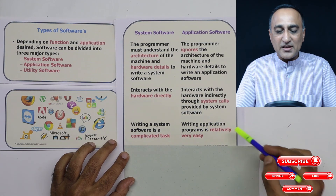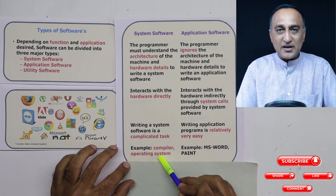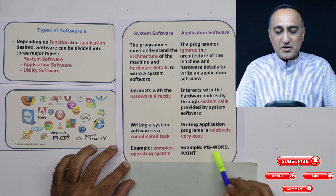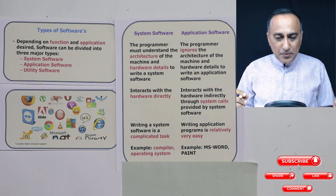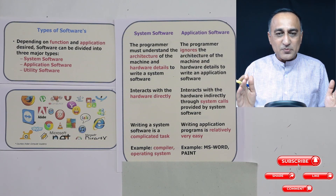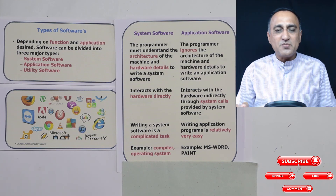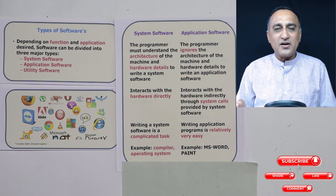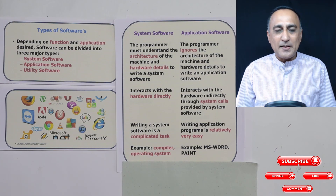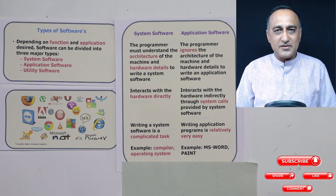Examples of system software include compilers and operating systems. Examples of application software include MS Word, MS Paint, and OpenOffice. The key takeaway is: the closer the relationship with the hardware, the more it is a system software requiring knowledge of hardware architecture. The further away from the hardware, the more likely it is application software. In the next session, I will talk about a classification of software called utilities. Thank you.